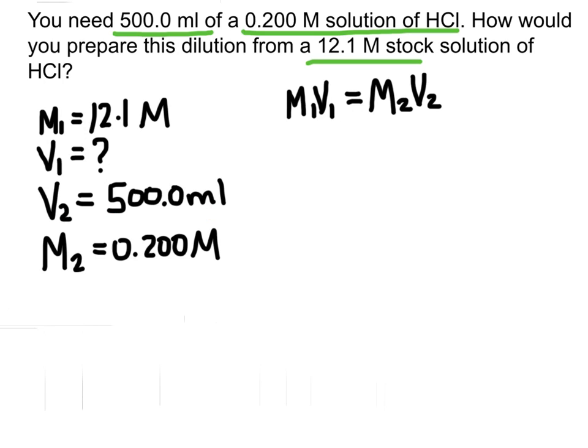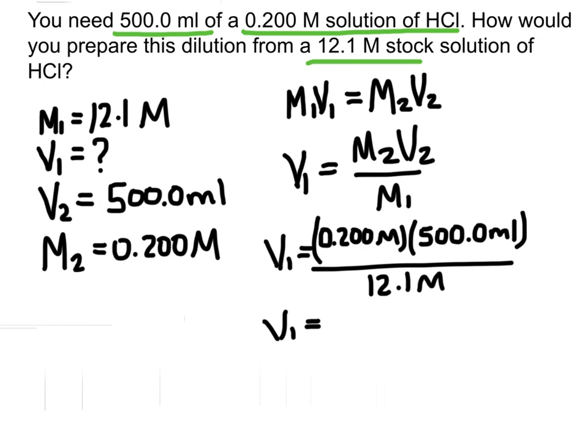Let's solve for V1. I'm going to rearrange this equation to solve for V1. It'll be M2 times V2 over M1. Now I can plug in all the information I know, and I get an answer of 8.3 milliliters.